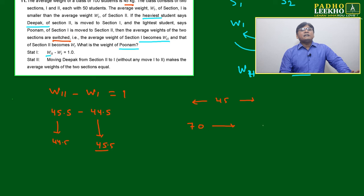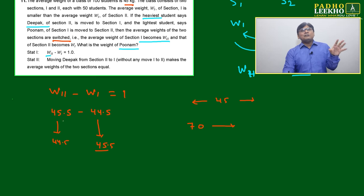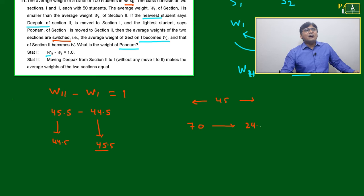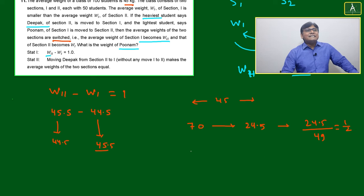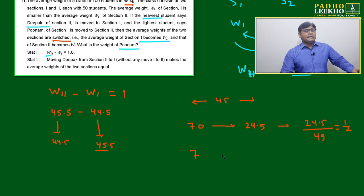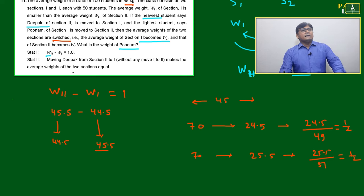If Deepak's weight is 70, the extra weight compared to Section 1's average of 45.5 is 24.5. This 24.5 is distributed over 49 students, changing the average by 0.5. Similarly, adding 70 to Section 2 gives an extra 25.5 over 51 students, also approximately 0.5. In both cases the shift is half, but Statement 1 alone is not sufficient to give the exact weight of Poonam.